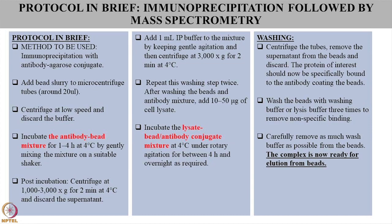The lysate–bead–antibody conjugate mixture is kept with gentle rotary agitation at 4°C for overnight binding. If you have already verified the protein's presence by western blot, you will know how abundant it is and can decide whether overnight incubation is needed — these parameters can be optimized. IP typically takes about three consecutive days. The next day, wash again to remove weakly bound or carry-over proteins so that you are identifying only the complex of interest. Then perform an elution — this step is optional; you can directly load the whole thing onto a gel, or perform in-solution digestion after elution.